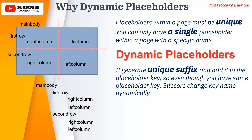Remember one important thing: placeholders are created by developers, and pages are designed by authors. So the right column placeholder is created by the developer, and the author designs the structure in the Experience Editor. The author doesn't know what is happening in the background — he will add a right column twice, but in the background the dynamic placeholder generates the unique suffix and adds it to the placeholder key.